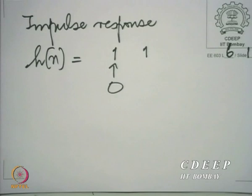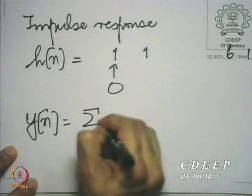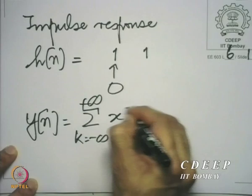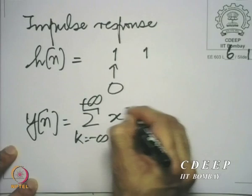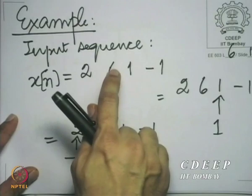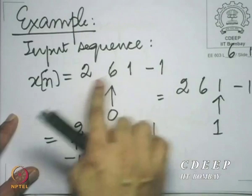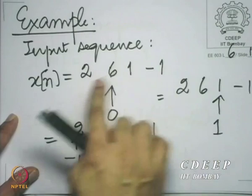I shall obtain the output in two different ways and explain the operation of convolution — why it is called convolution. One way is to use the expression with the interpretation that you are shifting and adding the impulse response several times. This means: take the impulse response, shift it by each k, scale that shifted impulse response by the value of the input sample at point k, and sum up all these shifted versions. So: shift the impulse response backward by 2, keep it as is, shift it forward by 1, forward by 2, and respectively multiply by 2, 6, 1, and minus 1.